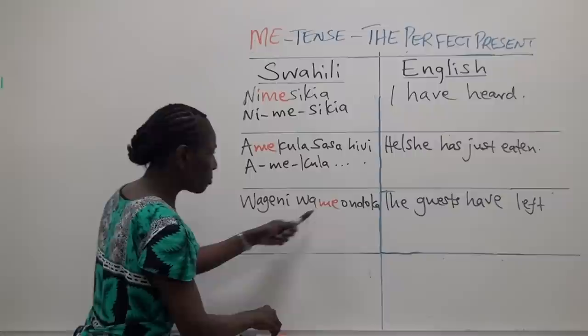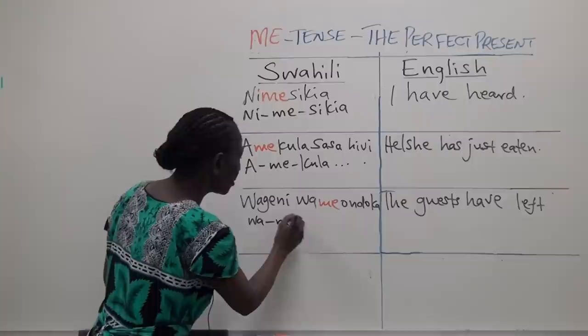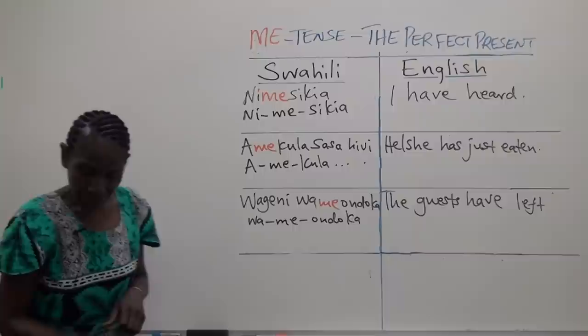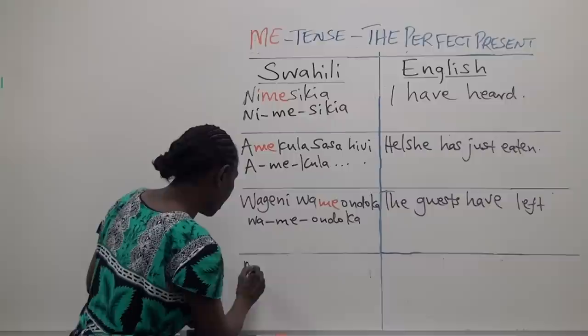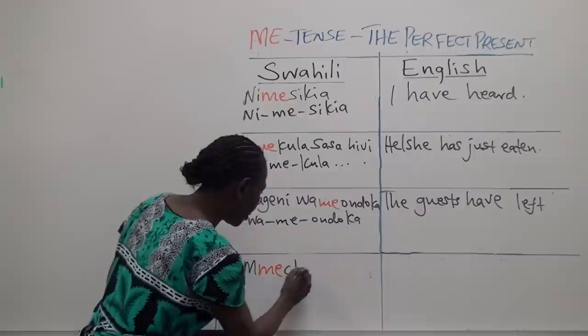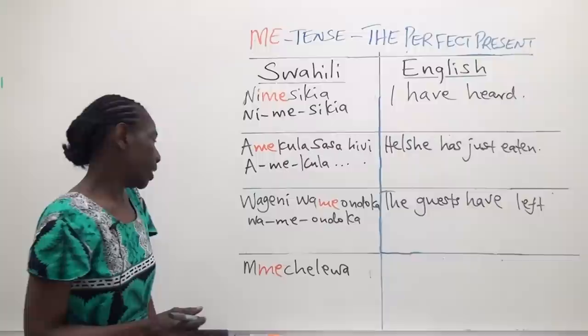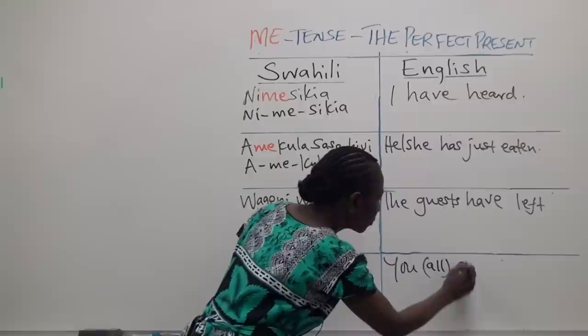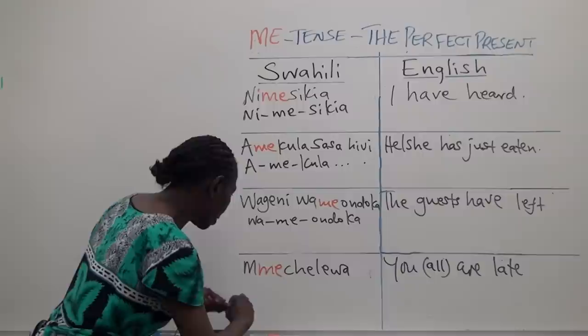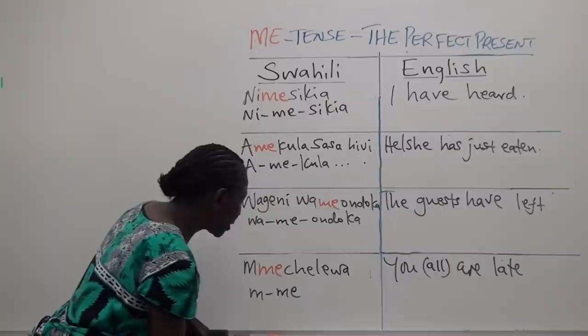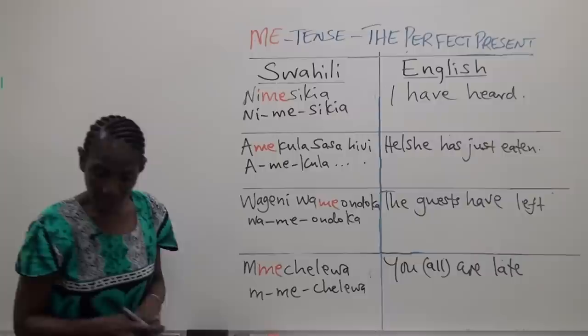We can break that word: Wa, the subject prefix; Me, the perfect tense; and then ondoka, which means 'leave.' And lastly, we can say: Mumeche lewa. The translation in English would be 'You all are late.' Breaking it down: Mu is the subject prefix, Me is the present perfect, and chelewa is the verb.